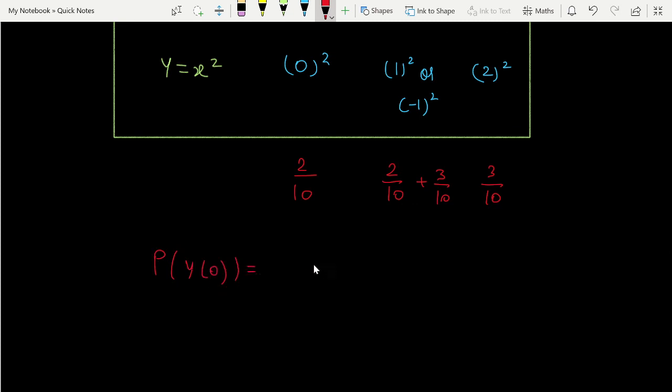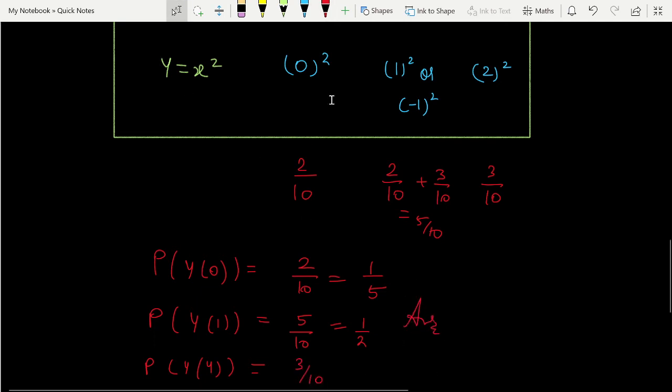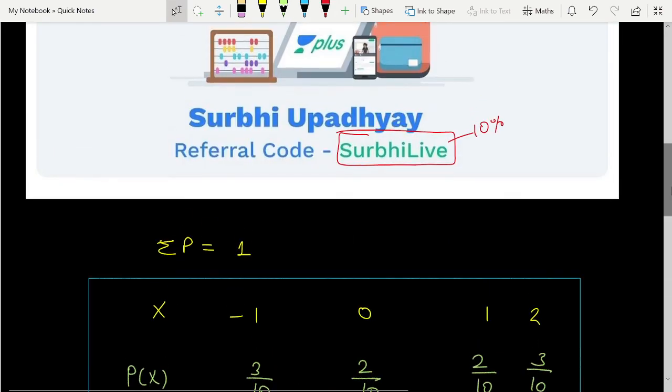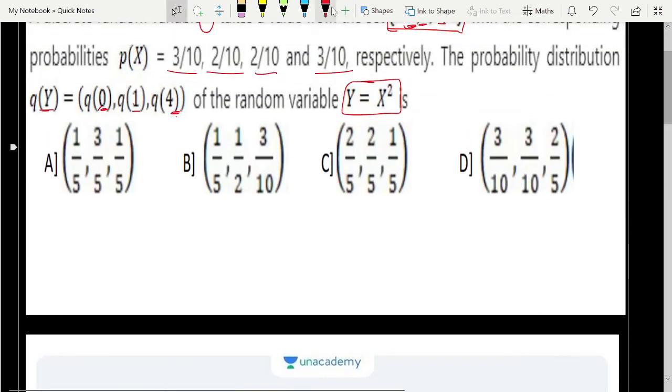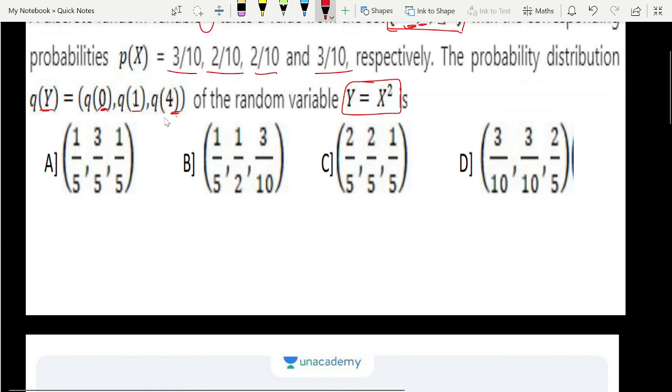Now we can write the separate probabilities. P(Y=0) is 2/10, which can be given as 1/5. P(Y=1) is 5/10, that means 1/2. And the last one, P(Y=4) is 3/10. So these will be your answers: 1/5, 1/2, and 3/10. Let's check the options for which is the correct option. It's 1/5, 1/2, and 3/10, so option B will be the correct answer.